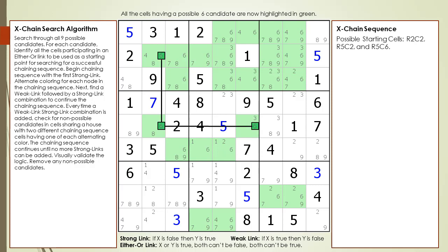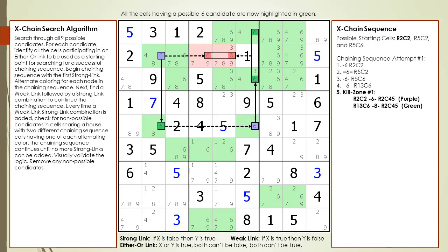Next we have identified 3 cells participating in either-or relationships. We can use these 3 cells as starting points when looking for a successful chaining sequence. We find a successful chaining sequence using cell 2,2 as a starting point.